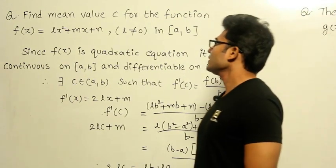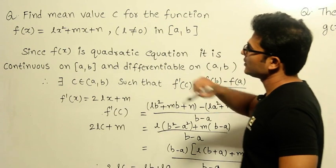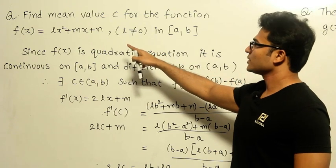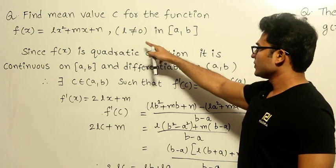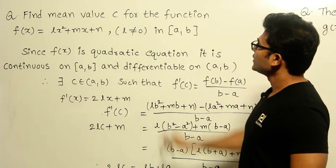Now let's see this example. Find the mean value C for the function f(x) = lx² + mx + n, where l ≠ 0, in [a,b].